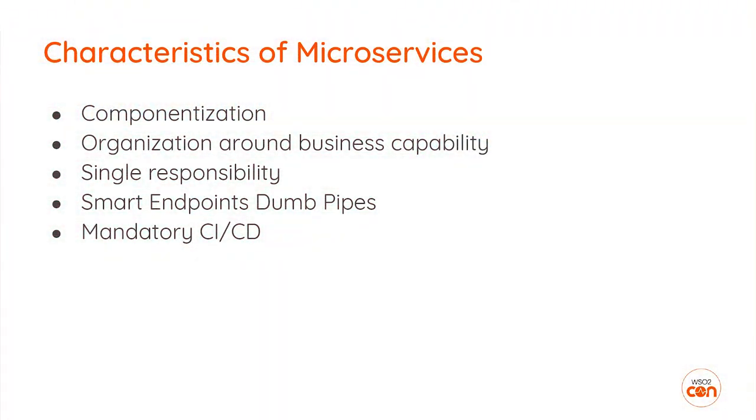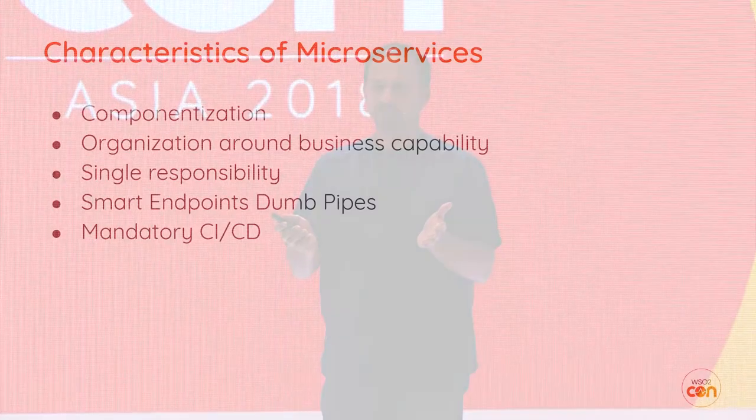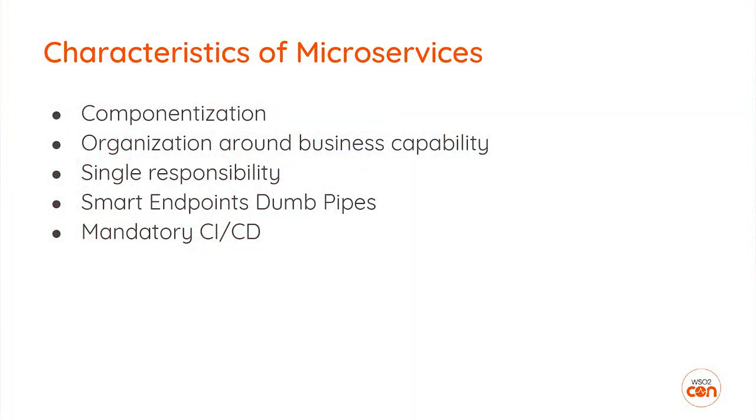Martin Fowler sets out several characteristics when designing a microservice application. The first is composability — you should design your application components in a modularized, or componentized, way so they can be independently developed, independently tested, and independently deployed without impacting the rest of the components. That's critically important for achieving agility. Also, when organizing these components, they have to be thought about from a business functionality point of view, not from a technology stack point of view.